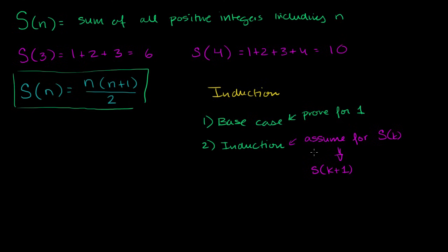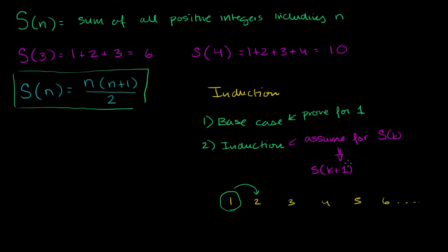The reason why this is all you have to do to prove this for all positive integers is: imagine all of the positive integers — 1, 2, 3, 4, 5, 6, and so on forever. We're going to prove it for 1, and then prove that if we know it's true for any given k, it's true for the next one. So if we know it's true for 1, the induction step says it must be true for 2. Well, if it's true for 2, then it must be true for 3. And then if it's true for 3, it must be true for 4. You can just keep going on and on forever, which means it is true for everything.